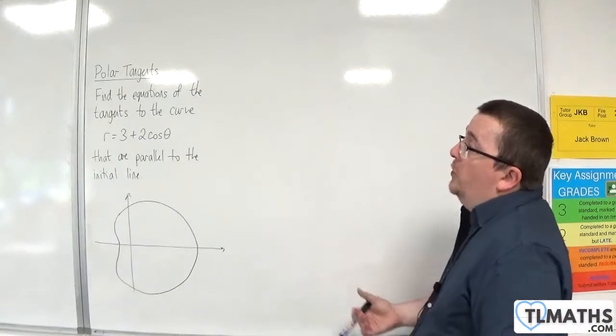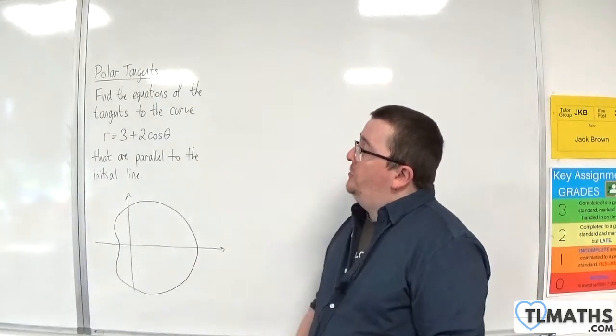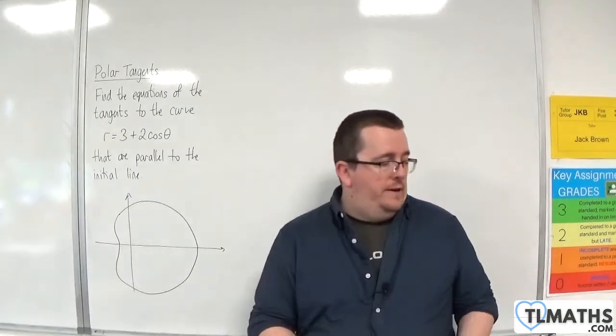So, let's say I wanted to find the equations of the tangents to the curve r equals 3 plus 2 cosine theta that are parallel to the initial line.